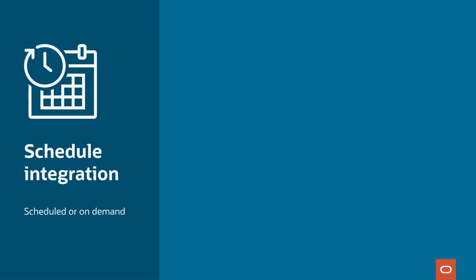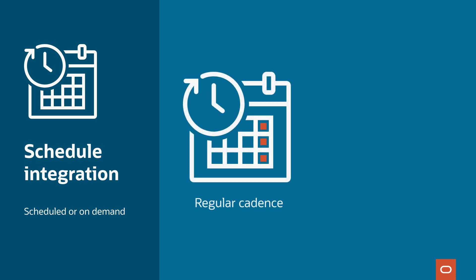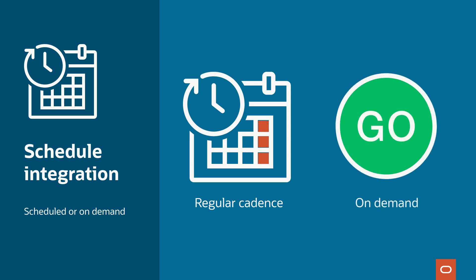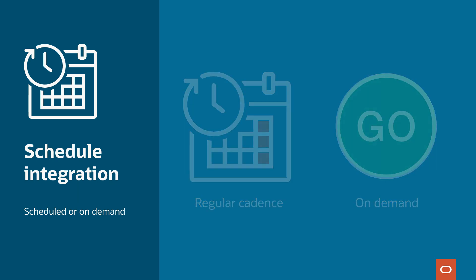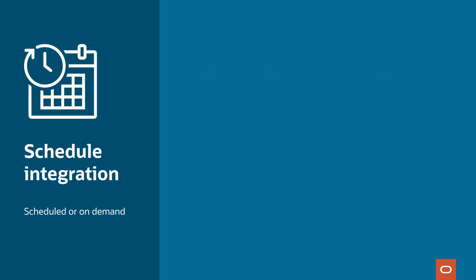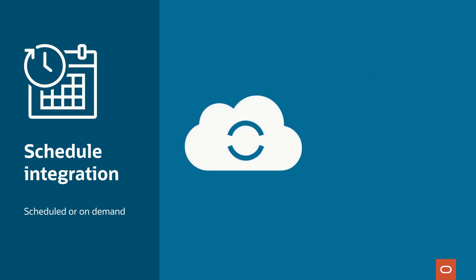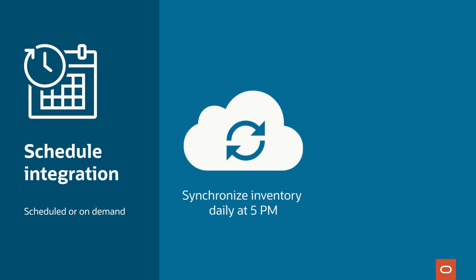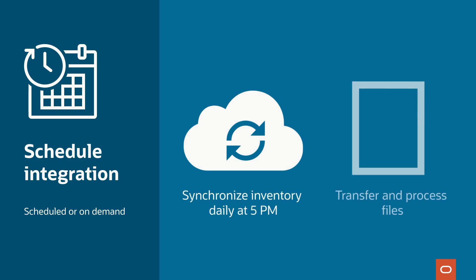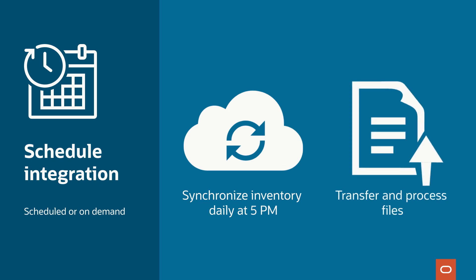A schedule integration is triggered on a regular cadence that can be as simple or as complex as you need, or you can run it on demand. For example, an integration can synchronize inventory across all applications every day at 5 p.m. A typical use case is transferring and processing files using the FTP adapter.